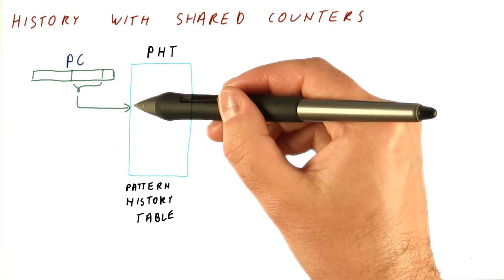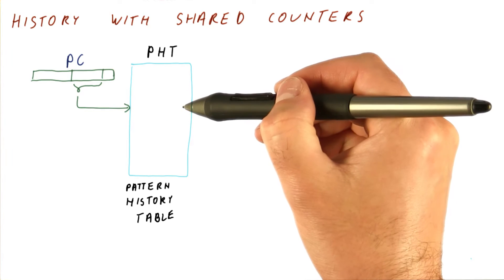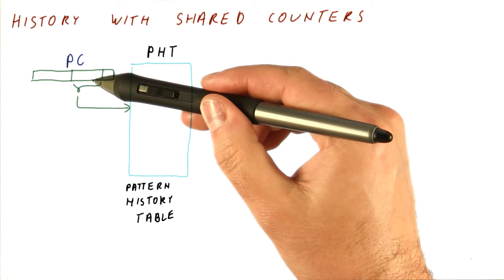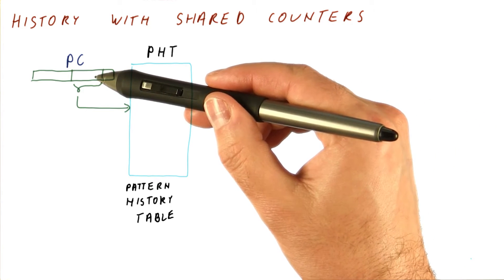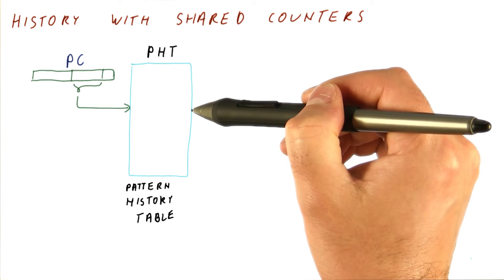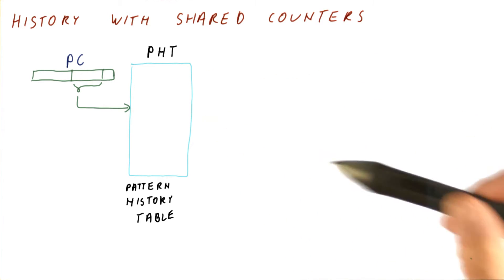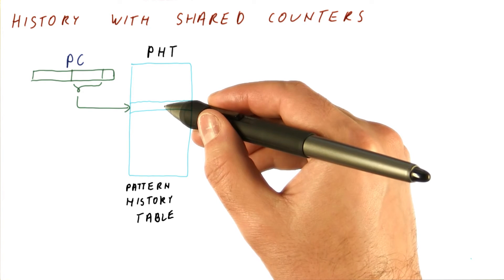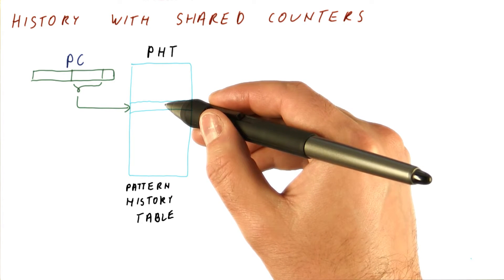This is a table that simply keeps the history bits alone for that branch. So if we have an 11-bit history, this table will have 11 bits per entry. So it doesn't have the two-bit counters. But we do need the two-bit counter to eventually tell us whether the branch is supposed to be taken or not taken.